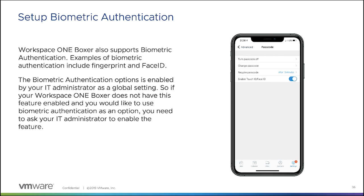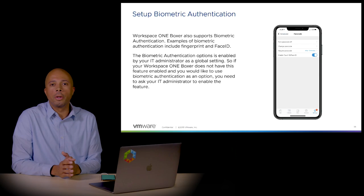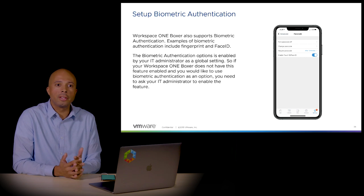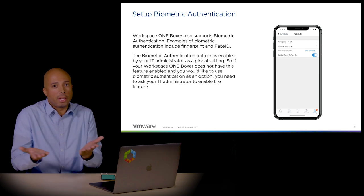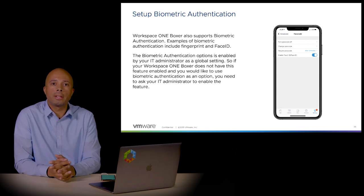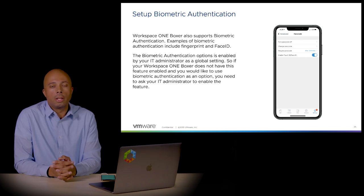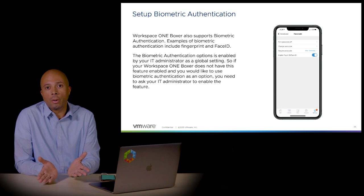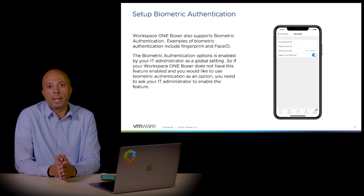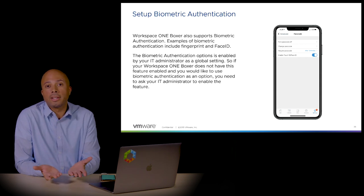We have a second layer of authentication built into the Boxer application — we can use biometrics. If you're using Face ID or Touch ID on an iOS device, or fingerprint authentication on an Android device, you can use that inside of Boxer. We're basically taking that authentication method and allowing you to securely access the application. You do have to have a passcode set up initially to have this feature turned on, but it's a very convenient way to get in securely.